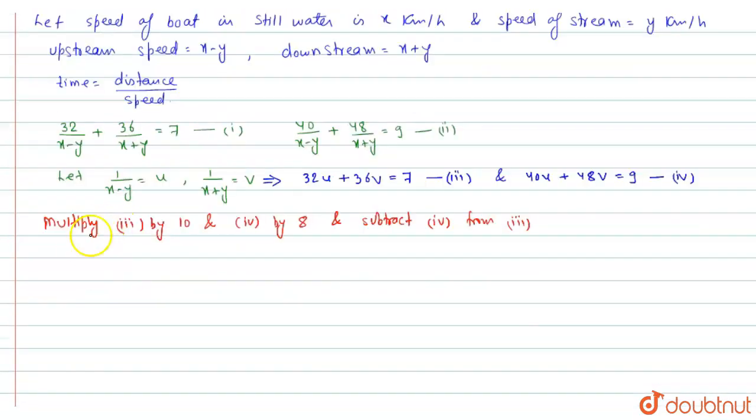So now we will obtain 320u plus 360v is equal to 70 from first, and 40 into 8 is 320u plus 384v is equal to 72.